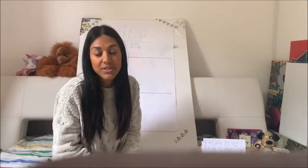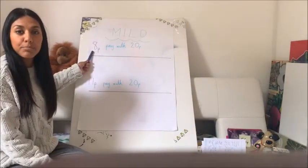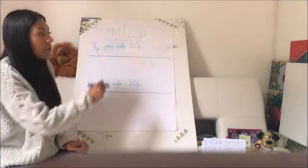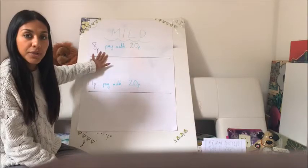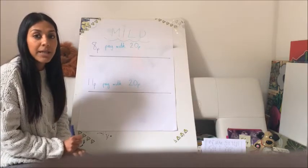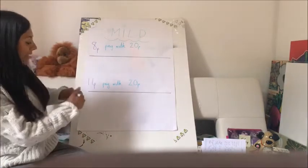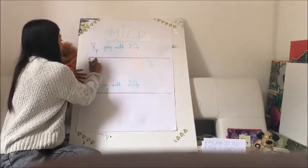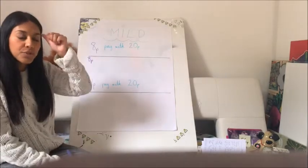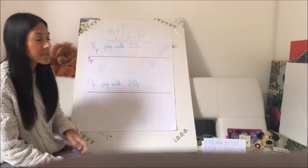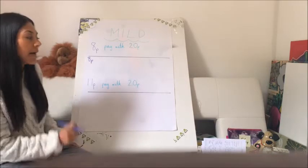Today the strategy I want all of us to use is counting on. I've put 8p here because 8p is the price of my item, and I'm going to pay with 20p. Here I have drawn a blank number line — just a line which you can all do. For this one I'm going to show you how to do it, and the next two I'm going to ask you to try. So make sure you have your paper and pen with you now — if you haven't, just pause this video and go and grab it.